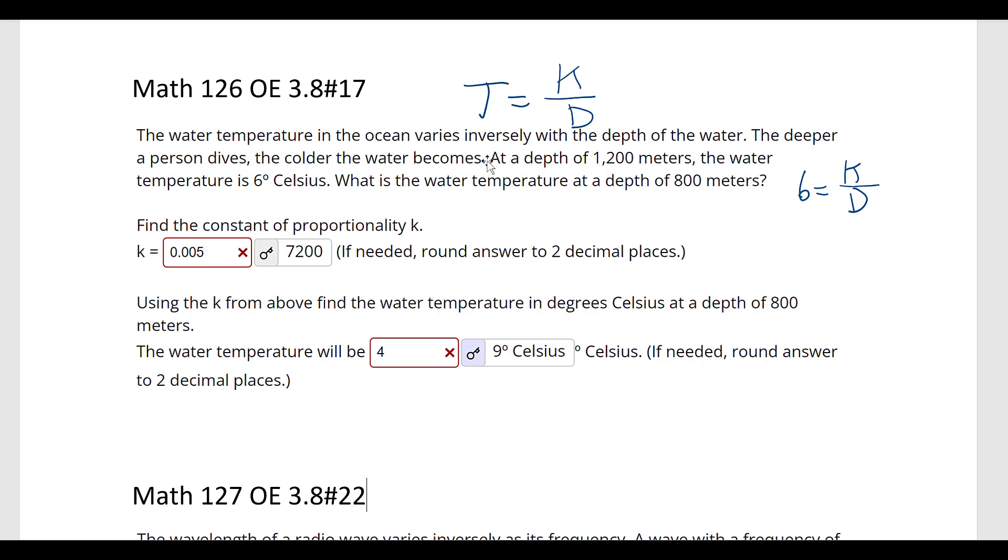Oh, k divided by 1,200, excuse me. So we're going to find k. So multiply both sides by 1,200.